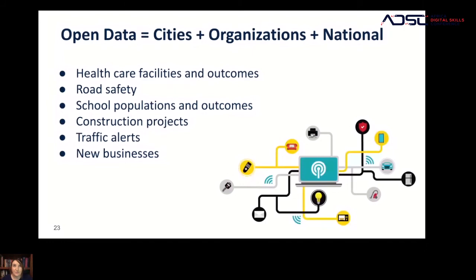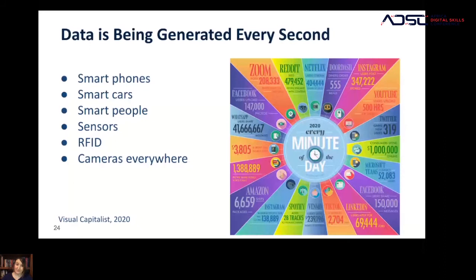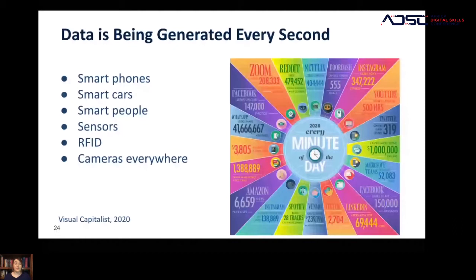It's important to note that while the Clean Streets example was data being collected by people, data is also collected and generated by machines. There are lots of things in our lives that generate data — from smartphones to smart cars, sensors, RFID, and cameras. All of those produce data constantly. Smartphones can tell you your location, and cameras can tell you weather patterns, traffic volume, and whether there were a lot of pedestrians in an area.